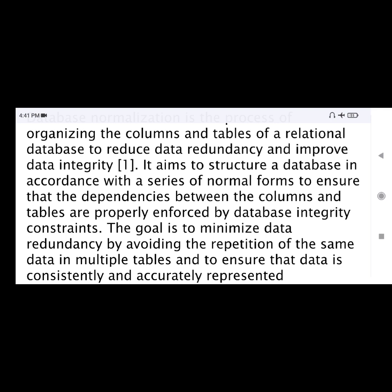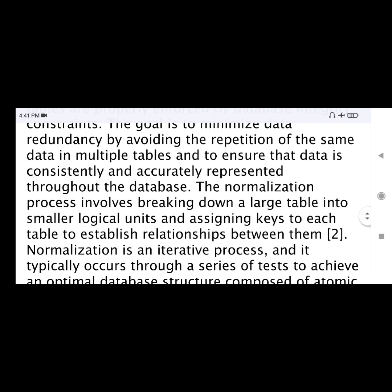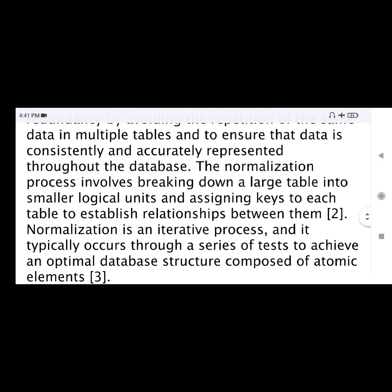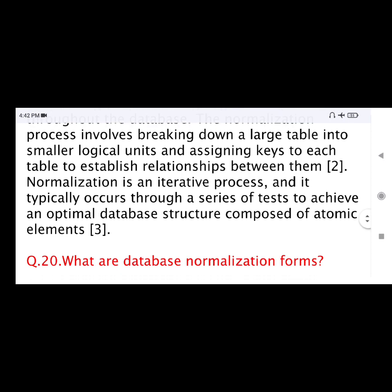The goal is to minimize data redundancy by avoiding the repetition of the same data in multiple tables, and to ensure that data is consistently and accurately represented throughout the database. The normalization process involves breaking down a large table into smaller logical units and assigning keys to each table to establish relationships between them. Normalization is an iterative process that typically occurs through a series of tests to achieve an optimal database structure composed of atomic elements.